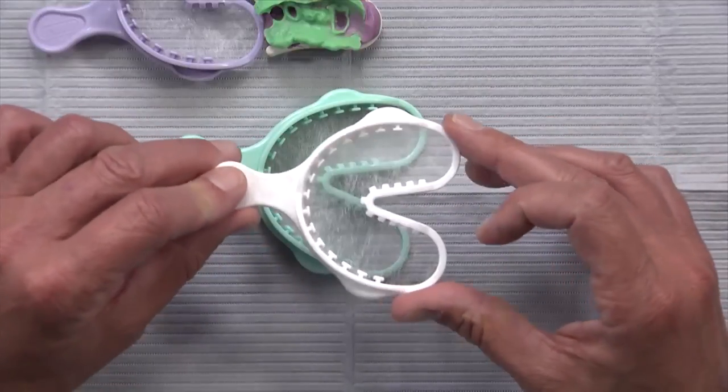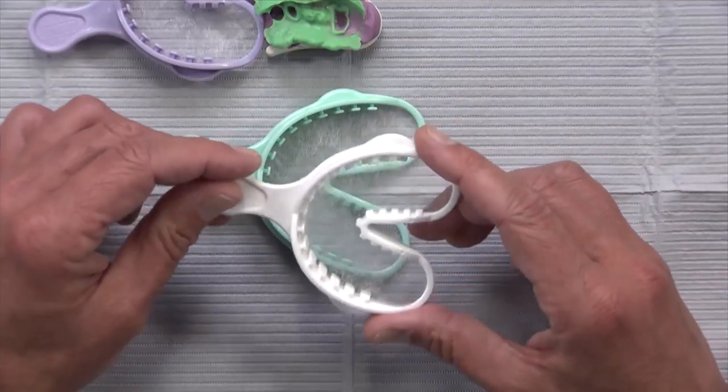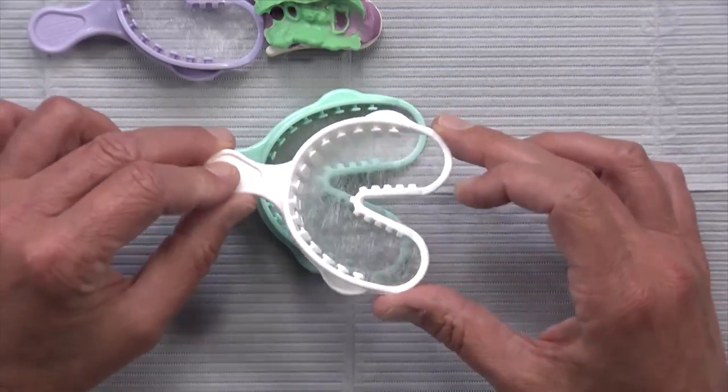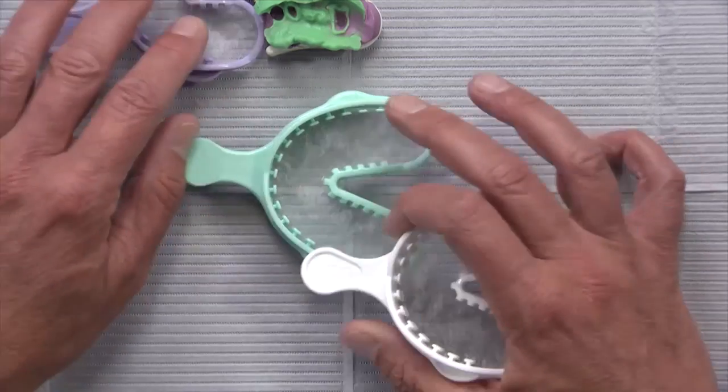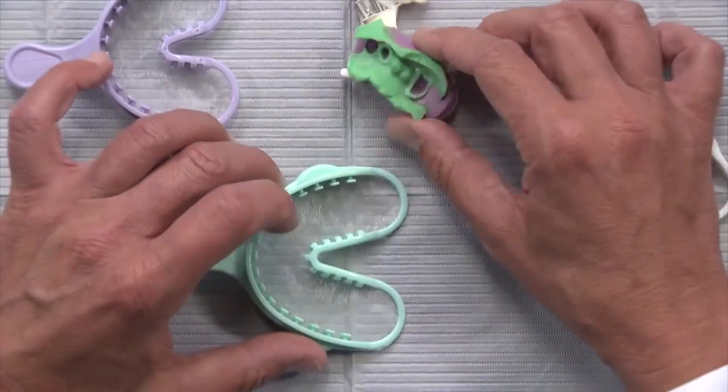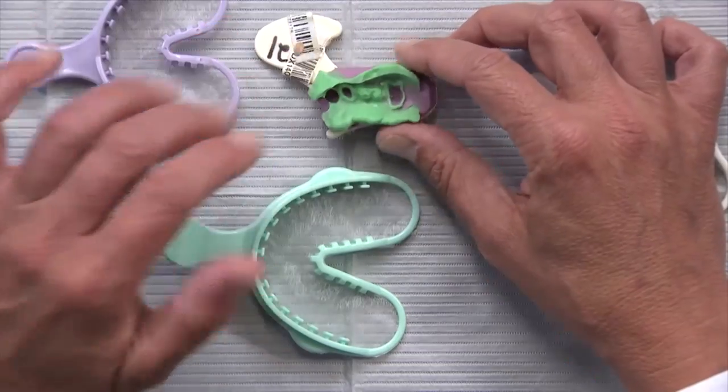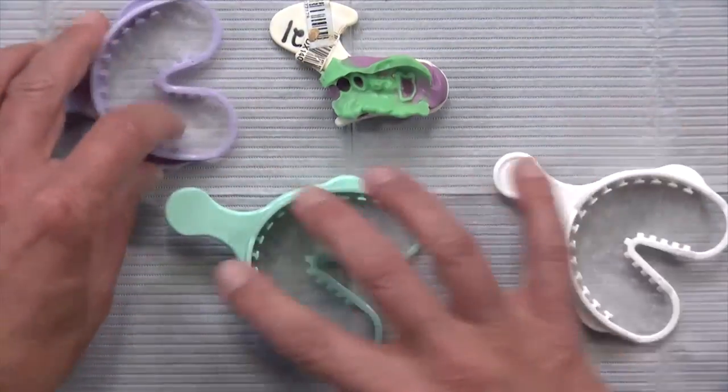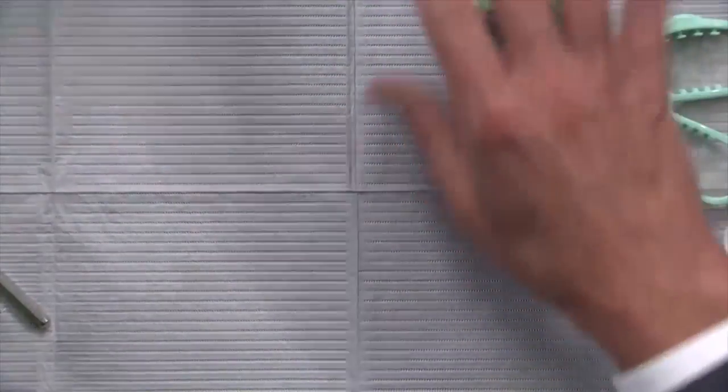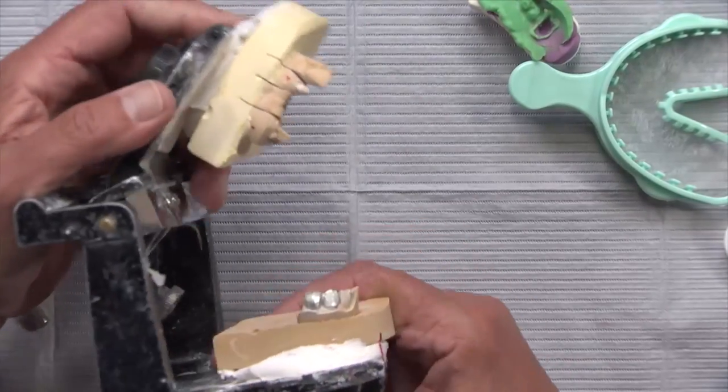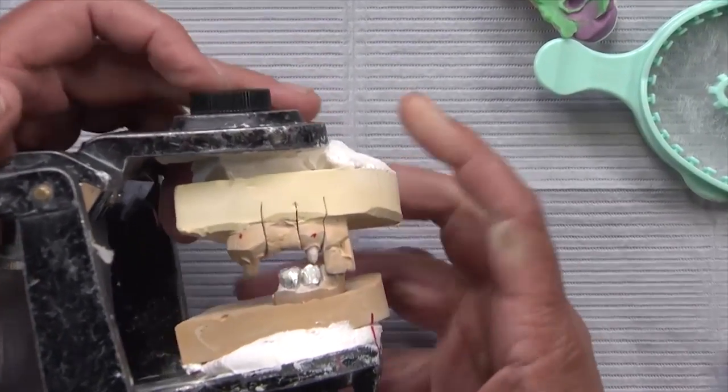So consider using these alpha trays not only for taking impressions for appliances that are going to cover all the teeth or for study models, but if you really insist on doing a double arch tray for a bridge like this, consider using one of these trays because when you don't,